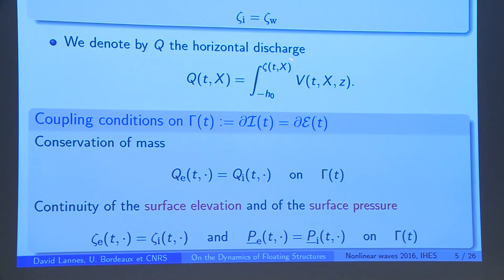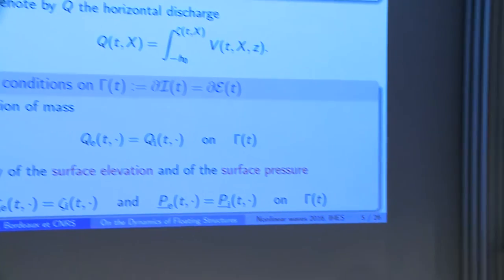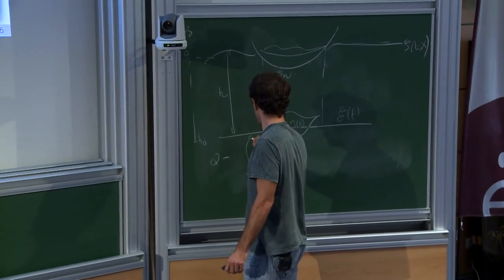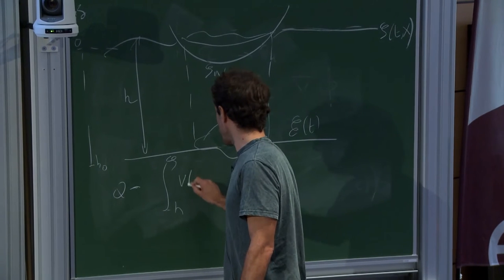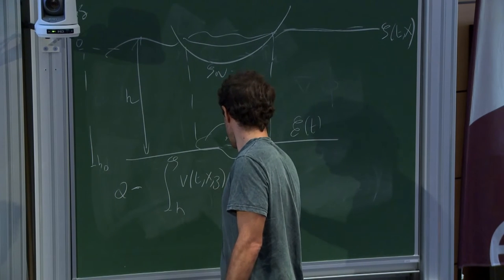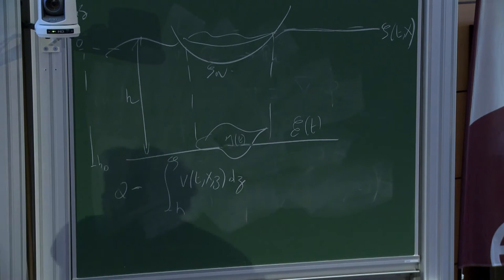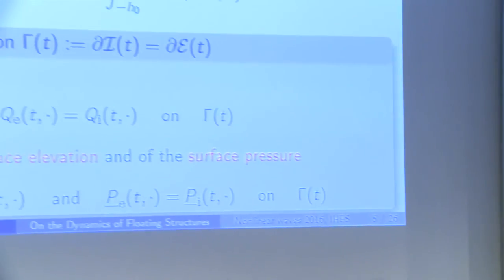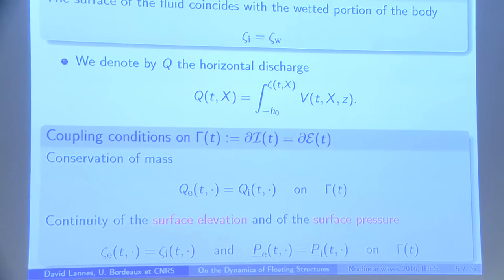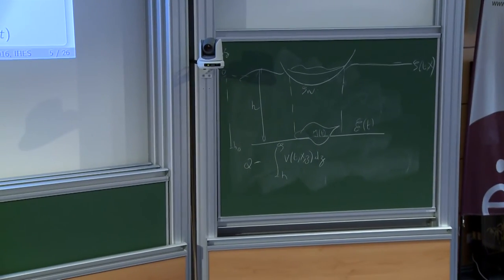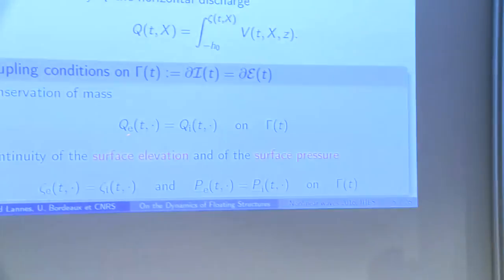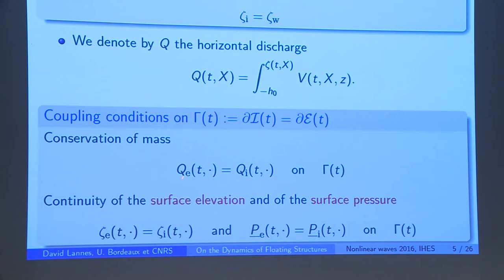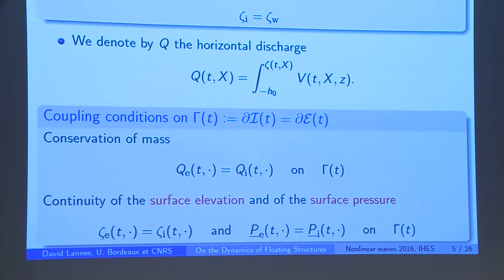The coupling condition will be given on the discharge. This discharge q is the vertical integral of the horizontal velocity. The physical condition is that the discharge should be a continuous function. When you cross gamma(t), going from the exterior to the interior region, you assume that the discharge is constant, which means that q, the exterior value of the discharge, is equal to the interior value of the discharge on the boundary.